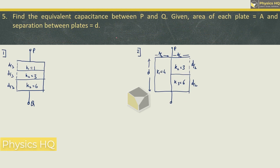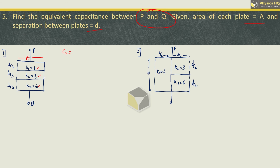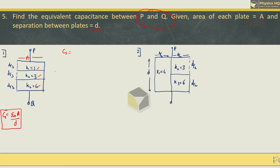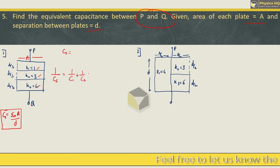C into V is nothing but the old charge. Next: find the equivalent capacitance between P and Q, given area of each plate is A and separation between plates is D. Here we have two cases. In the first case, the area of the plates is A, but there are three different dielectric materials with K values given as 1, 3, and 6, and these are in series. So we find the series combination. General capacitance formula is epsilon naught A by D.